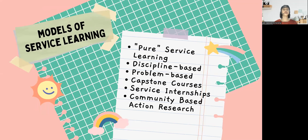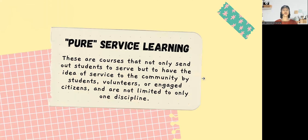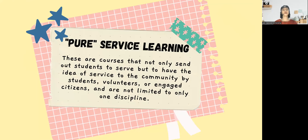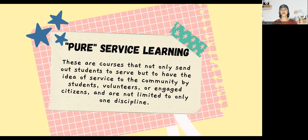Now we have the models of service learning. We have six categories: pure service learning, discipline-based, problem-based, capstone courses, service internships, and community-based action research. Pure service learning refers to courses that not only send students to serve, but cultivate the idea of service to the community by students, volunteers, or engaged citizens, and are not limited to only one discipline. Civic components prepare students to actively participate and be responsible in the community.